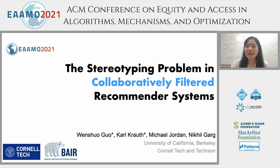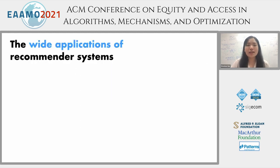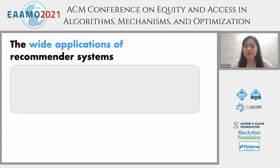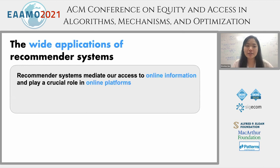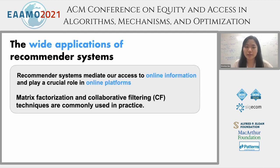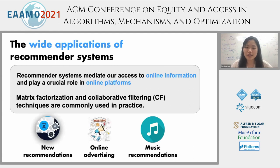The project we are thinking about is the stereotyping problem in collaboratively filtered recommender systems. We start with this problem because there are really a lot of wide applications of recommender systems. In particular, recommender systems mediate our access to online information and play a crucial role in many online platforms. Among many of these applications, a majority of approaches are focused on matrix factorization techniques. A few applications include news recommendation, online advertising, and music recommendation.